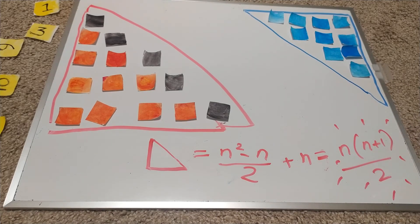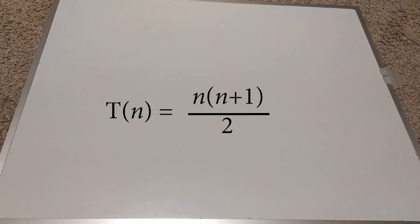We call this formula T of n, where T stands for took some effort but we got it.